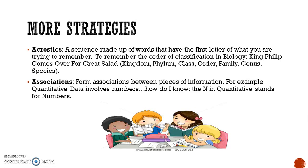Acrostics are sentences made up of words that have the first letter of what you are trying to remember. In biology, to remember the levels of classification, we came up with a sentence that takes the first letter of each word we want to remember. So we remember 'King Philip comes over for great salad,' which stands for kingdom, phylum, class, order, family, genus, and species.